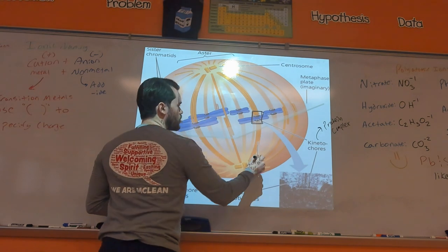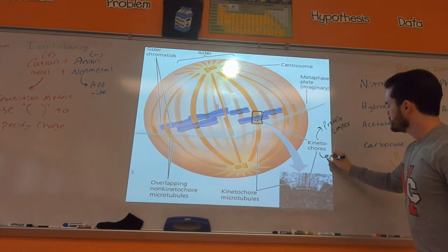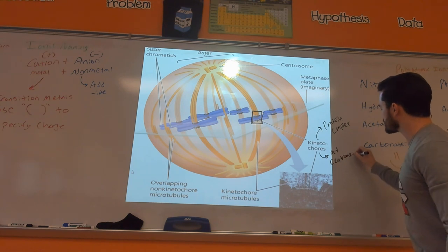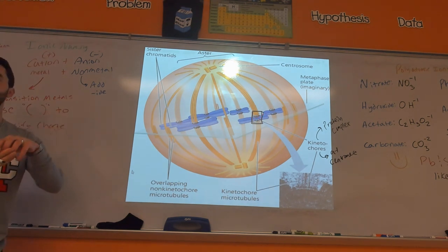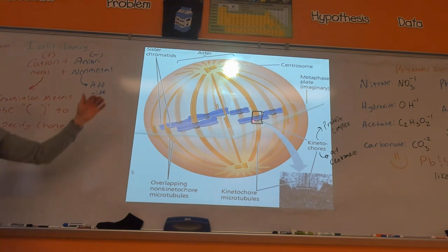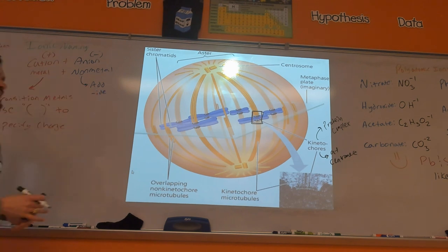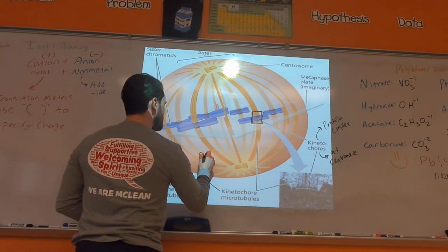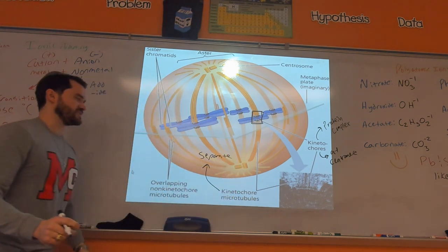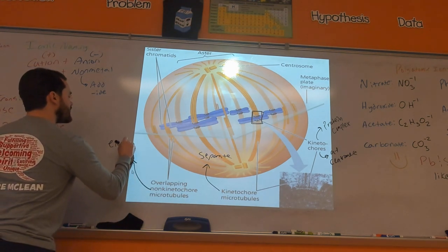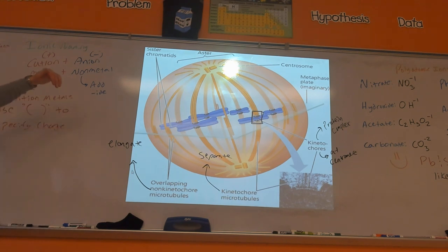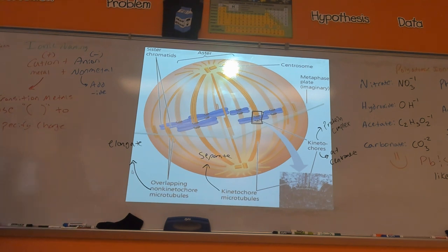The kinetochore is at the centromere. Each sister chromatid has a centromere, and the kinetochore builds itself on the centromere. The kinetochore microtubules hook up to the kinetochores, and their job is to separate the sister chromatids. The overlapping non-kinetochore microtubules have the main job of elongating the cell, pushing outward so that ultimately we can do cytokinesis and split the cell into two.